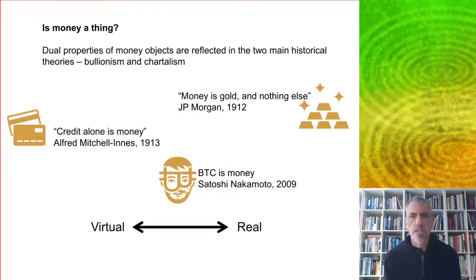These dual properties are reflected in the two main historical theories of money, which are bullionism. Money is gold and nothing else, as JP Morgan said. And chartalism, which is the idea that credit alone is money, as Alfred Mitchell said in the next year. But then Bitcoin comes along. And on the one hand, it seems to be completely virtual. But on the other hand, it's also real, as you'll notice if you happen to lose the hard drive in which your Bitcoins are located.